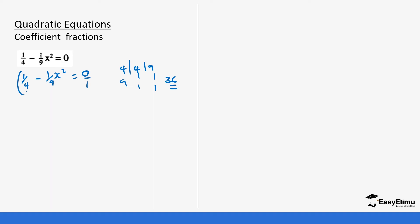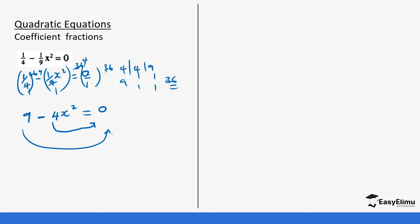You multiply every term by the LCM, which is 36. So 36 divided by 4 gives 9, and 36 divided by 9 gives 4. This becomes 9 minus 4x² equals zero — because 0 times 36 is still 0. So multiplying through by the LCM clears all the fractions.